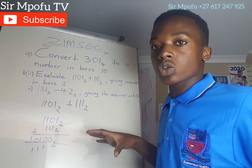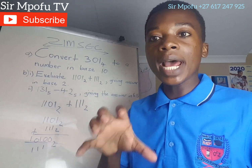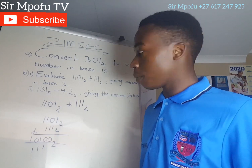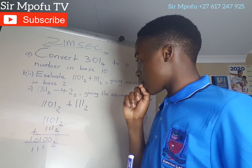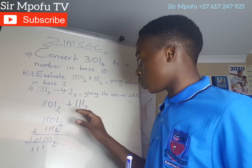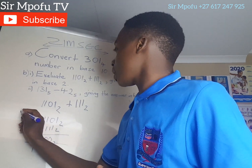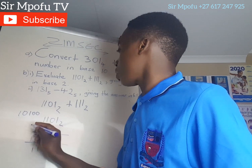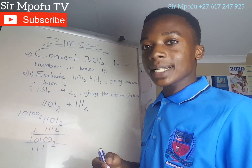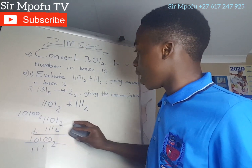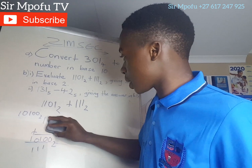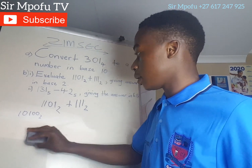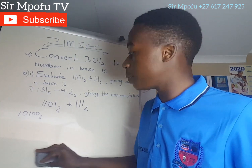The answer in base 2 is 1, 1, 0, 0 — that is 11000 in base 2. We used a different method here but we get the same answer. As always, many methods lead to the same correct answer.